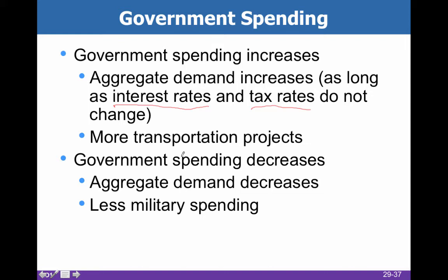When we talk about government spending, we're typically talking about transportation projects — building roads, bridges, that kind of thing. Government spending sometimes decreases as well, which will decrease aggregate demand. An example would be decreasing military spending, or the government choosing not to build schools, airports, or roads — some of the public goods they often provide.